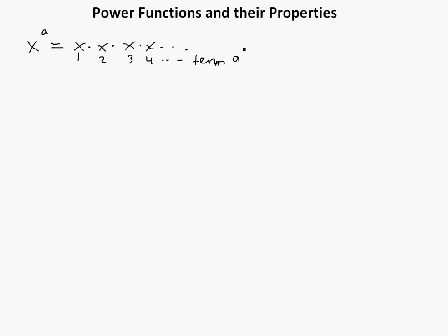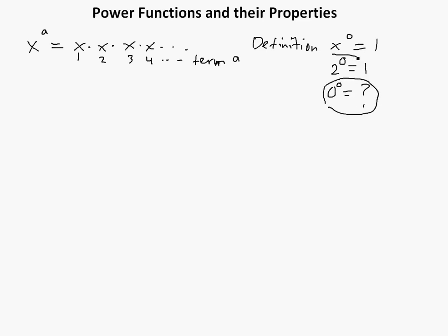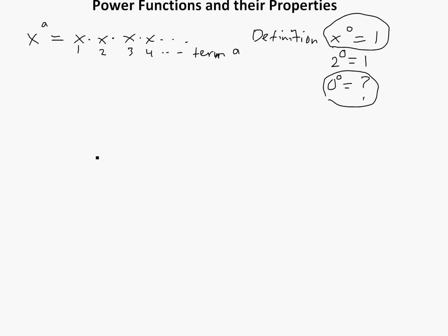There's also a definition property: by definition, x to the 0 equals 1. So if you have 2 to the 0, it equals 1, and so on. But 0 to the 0 — this is tricky, and I'll explain this in another video in detail. This is actually very interesting. You probably just had to memorize it.